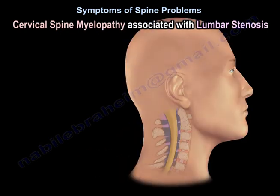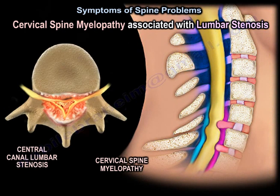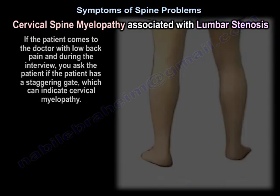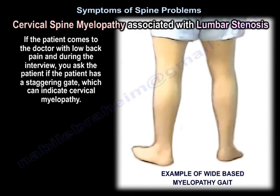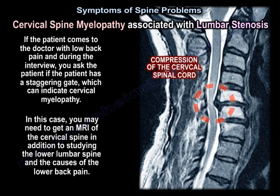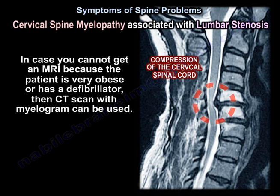Another situation where history is important is cervical myelopathy associated with lumbar stenosis. If the patient comes with low back pain and during the interview you ask about a staggering gait — which can indicate cervical myelopathy — you may need to get an MRI of the cervical spine in addition to studying the lumbar spine. If an MRI cannot be obtained because the patient is obese or has a defibrillator, then myelogram with CT scan can be used.